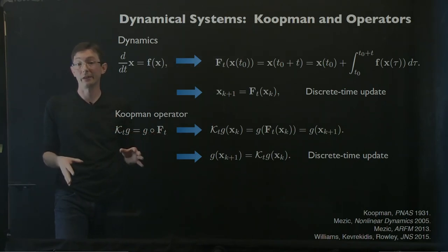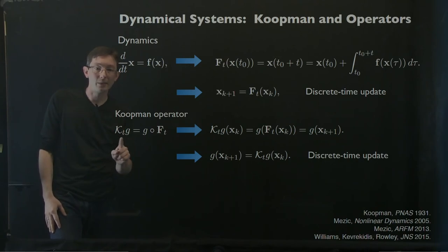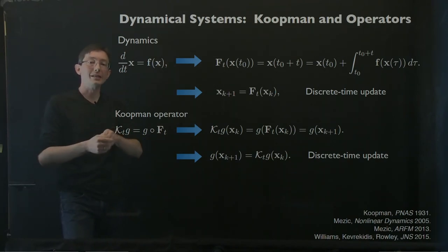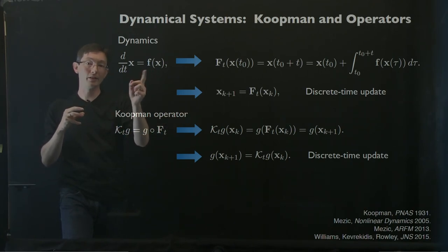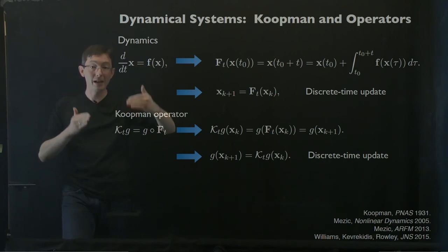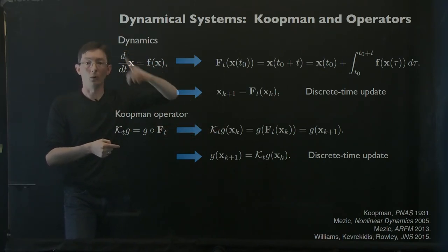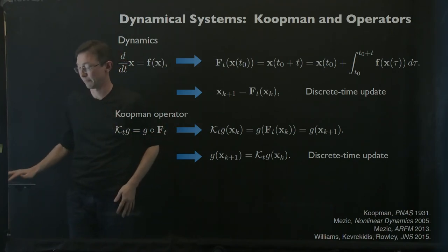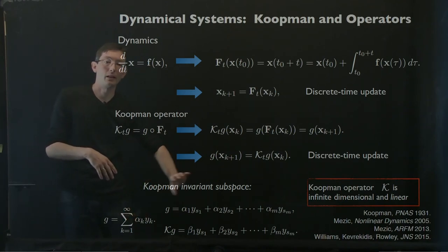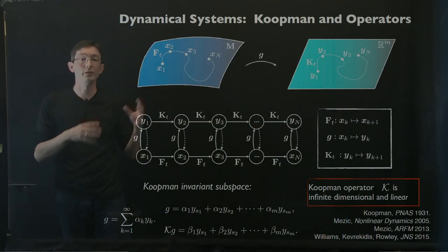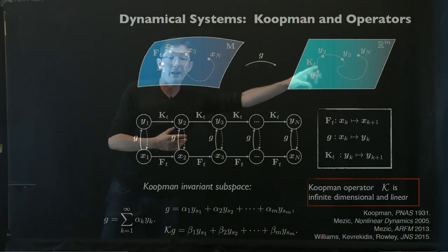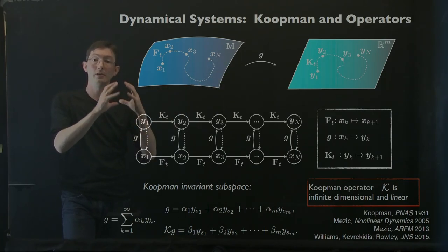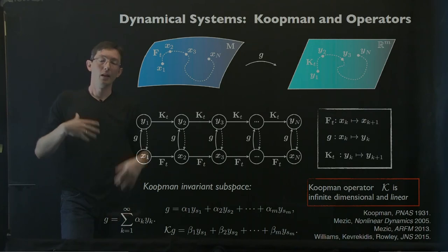Finding a closed finite-dimensional approximation of this infinite-dimensional operator is very challenging and has been the focus of intense research over the last decade. What we know now is that we're trying to identify eigenfunctions of the Koopman operator — these are special eigen-measurements such that if I measured my nonlinear system in those exact coordinates, those measurements would behave linearly in time, with exponential or oscillatory behavior. If I found a collection of eigenfunctions, I could span a Koopman invariant subspace, and restricting the operator to that subspace gives a finite-dimensional matrix.